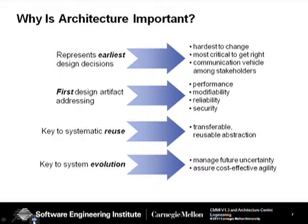One of the pushes these days is to try to do less work, so systematic reuse is a goal for many people. But if you don't do reuse that's architected appropriately, the components you wish to reuse will not be transferable. And lastly, if you're going to pursue smart evolution, the architecting can either send you on the right path or the wrong path.